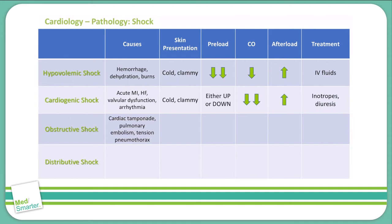Obstructive shock is caused by cardiac tamponade, pulmonary embolism, and tension pneumothorax. The skin presentation is cold and clammy. Obstructive shock presents similarly to cardiogenic shock — preload can go either up or down, cardiac output is greatly decreased, and afterload is increased. The treatment, however, differs from cardiogenic shock: for obstructive shock, we simply relieve the obstruction. If you have a tamponade, embolism, or pneumothorax, fixing that problem will relieve the obstructive shock.